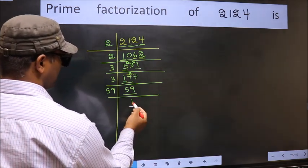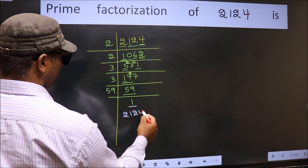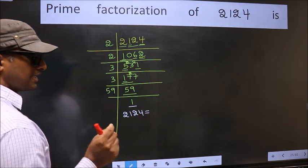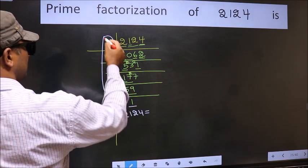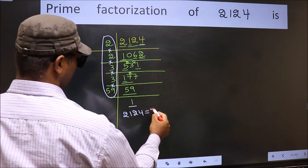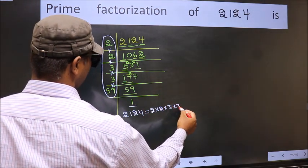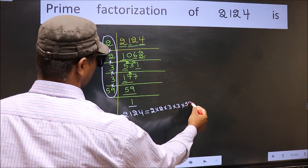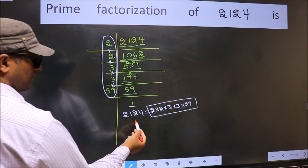So the prime factorization of 2124 is the product of these numbers: 2 times 2 times 3 times 3 times 59. This is the prime factorization of 2124.